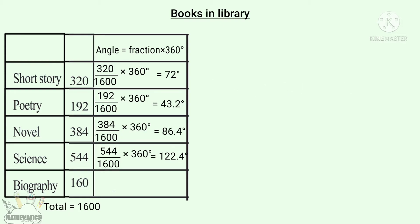Now we have to write the angle of Biography. The total is 1,600 books — that is 160 books. So the fraction is 160 by 1,600. So the angle is 160 by 1,600 into 360 degrees.